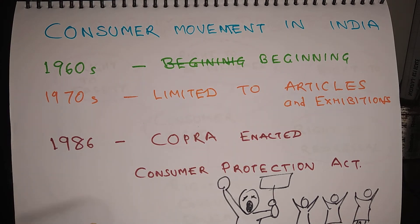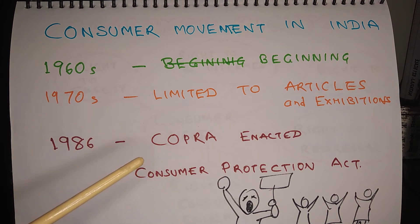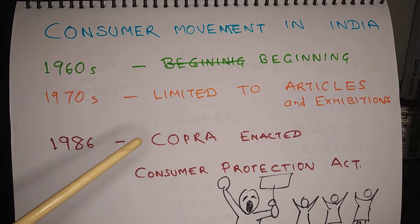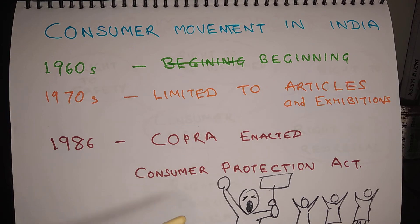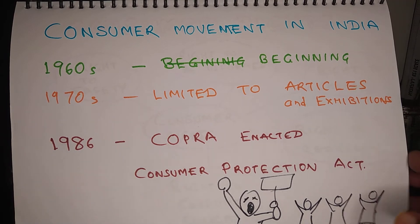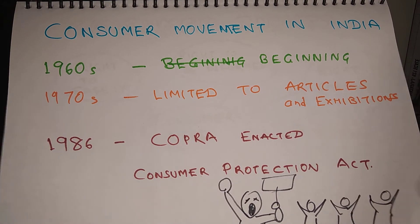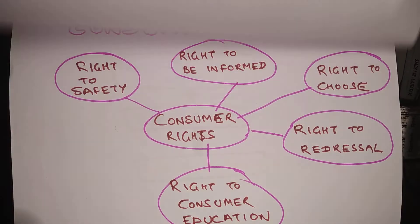Throughout the 1970s, the consumer movement was limited to writing articles and holding exhibitions. Because of the pressure created by them, the Government of India enacted COPRA in 1986. COPRA — C-O-P-R-A — stands for the Consumer Protection Act. Once the Consumer Protection Act came into force, it offered certain rights to consumers in India.